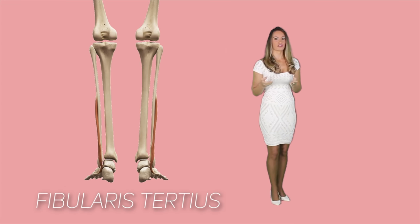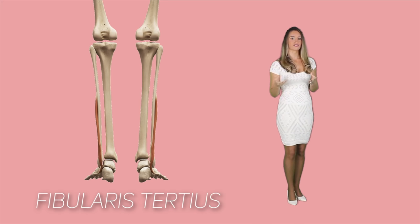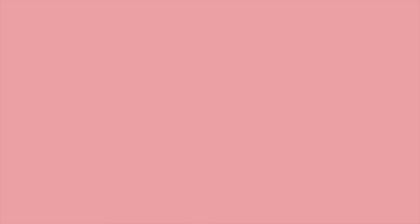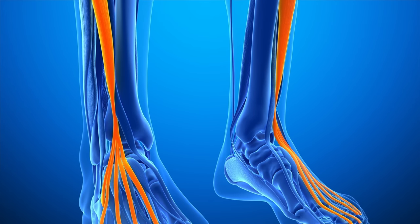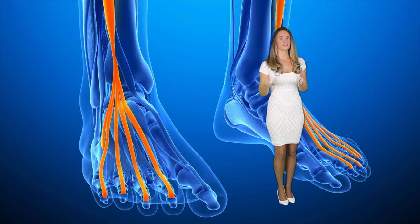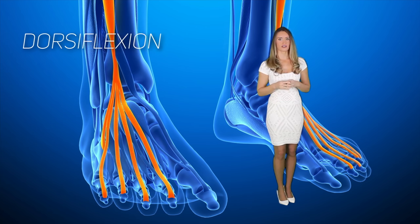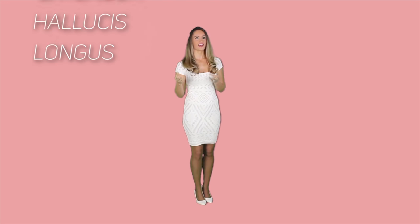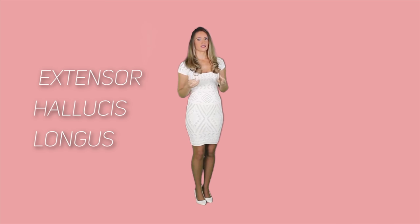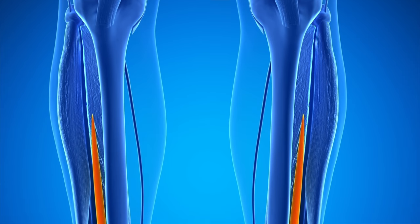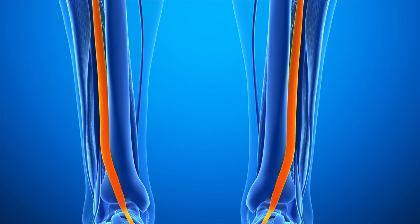The third dorsal flexor muscle is the extensor digitorum longus, also laterally located on the leg, posterior to the tibialis anterior. Its origin is the proximal tibia and the long fibula shaft. The extensor digitorum longus is involved with dorsal flexion, foot extension, and foot eversion. The final dorsal flexor is the extensor hallucis longus, linking the great toe with the anterior fibula. Its contraction causes foot inversion, extension of the great toe, and dorsiflexion.